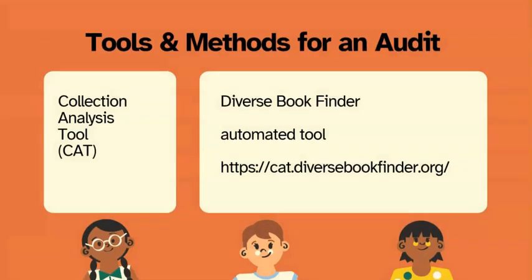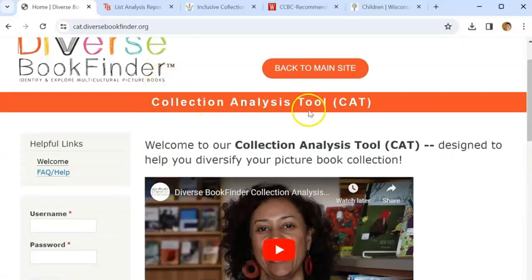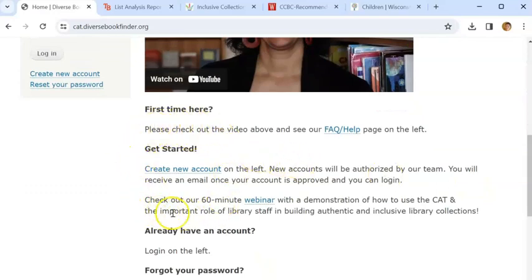The first tool we'll look at is an automated tool available from Diverse Book Finder, and it is free. Diverse Book Finder is a comprehensive database of children's picture books that feature diverse characters — 3,000 picture books that have been published since 2002. When we come to the Diverse Book Finder website, I'm on the collection analysis tool page. As we scroll down, we'll get to the Get Started section, where you create your account if you don't have one. There's also a webinar with a demonstration if you'd like to see the tool in greater detail.